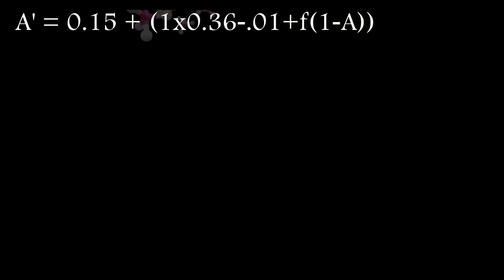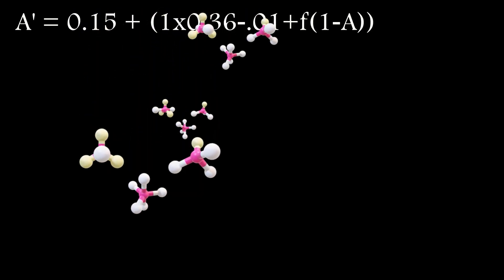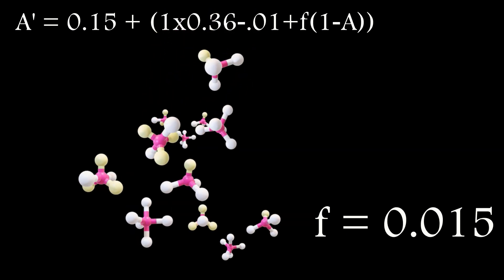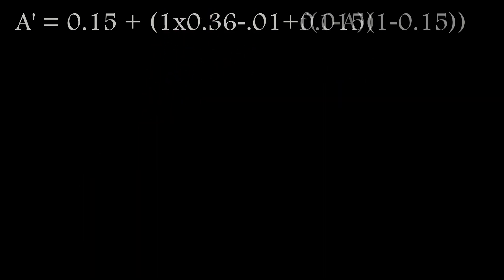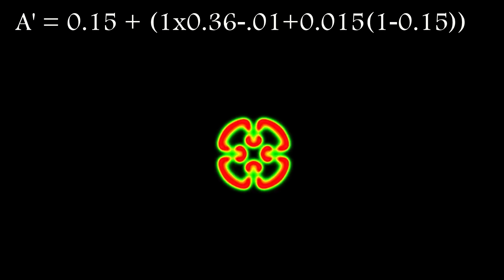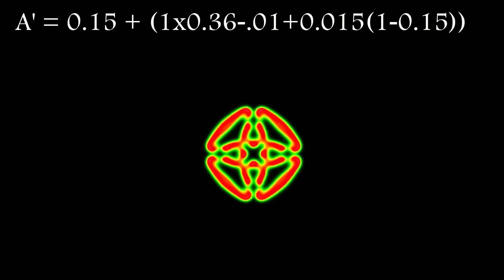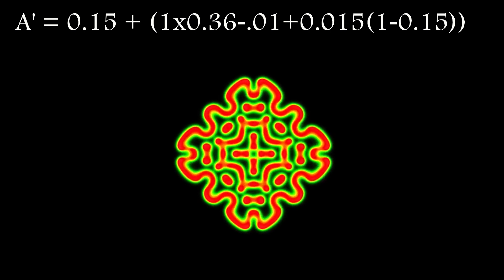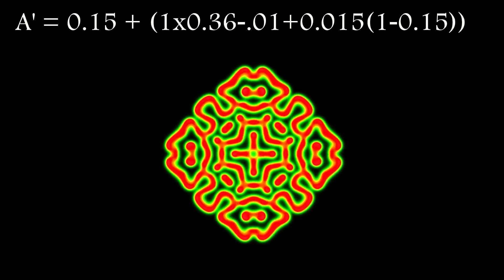The final term is the replenishment term. Since the reaction uses up chemical A and generates chemical B, all of A will eventually get used up unless there is a way to replenish it. The replenishment term says that A will be increased at a rate proportional to the difference between its current level and 1. As a result, even if the other two terms had no effect, 1 would be the maximum value for A. The constant F is the feed rate and represents the rate of replenishment.